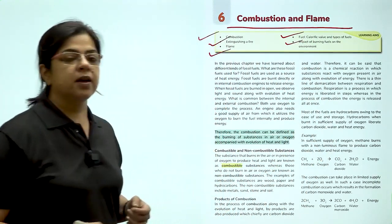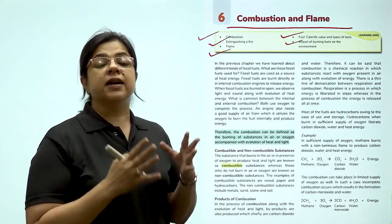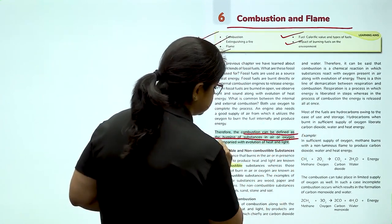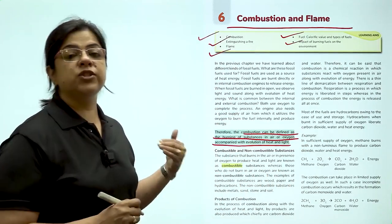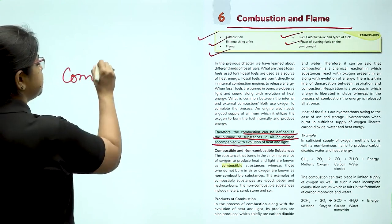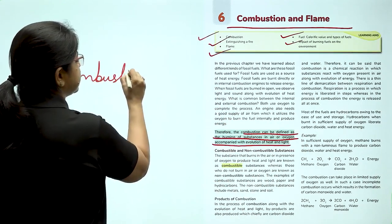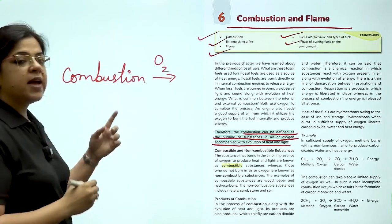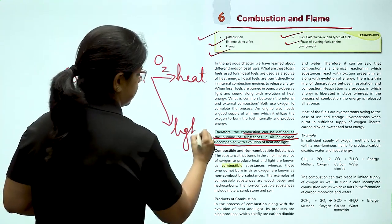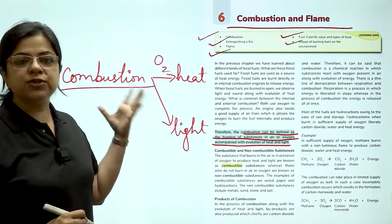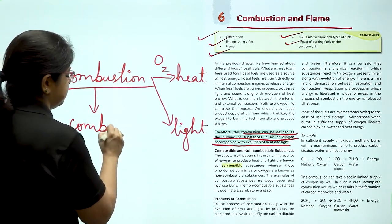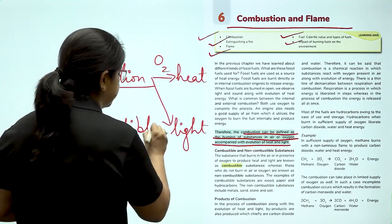And what is a flame? So children, essentially combustion is defined as the process of burning of substances in air or oxygen which leads to the evolution of heat and light. So combustion number one essentially takes place in the presence of oxygen and it gives out heat and it gives out light. In order for combustion to take place, a substance has to be combustible. That means you should be able to burn it.